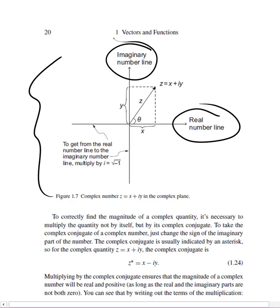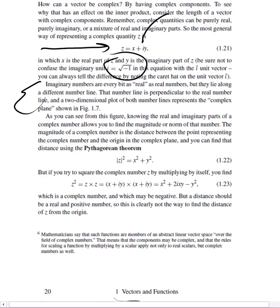So when you plot a complex number on the complex plane, here is z equals x plus iy. You go along the horizontal axis a distance given by the real part, and then you go in the vertical direction by an amount given by the imaginary part. But if you want to know the magnitude, norm, length, or distance from the origin to z, you have to be aware that complex numbers work differently.